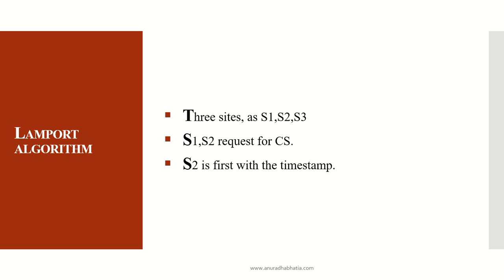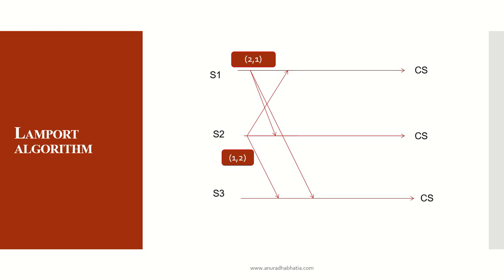Let's say there are three sites S1, S2, and S3. S1 and S2 both request for a critical state, but S2 is the first with a timestamp — that is, on the logical clock of synchronization, S2 has acquired the timestamp first, so S2 should be the first to enter the critical state. From S1, S2, and S3, you will see the messages passed to all the other processes: from S1 it goes to S2 and S3, and from S2 it goes to S1 and S3.